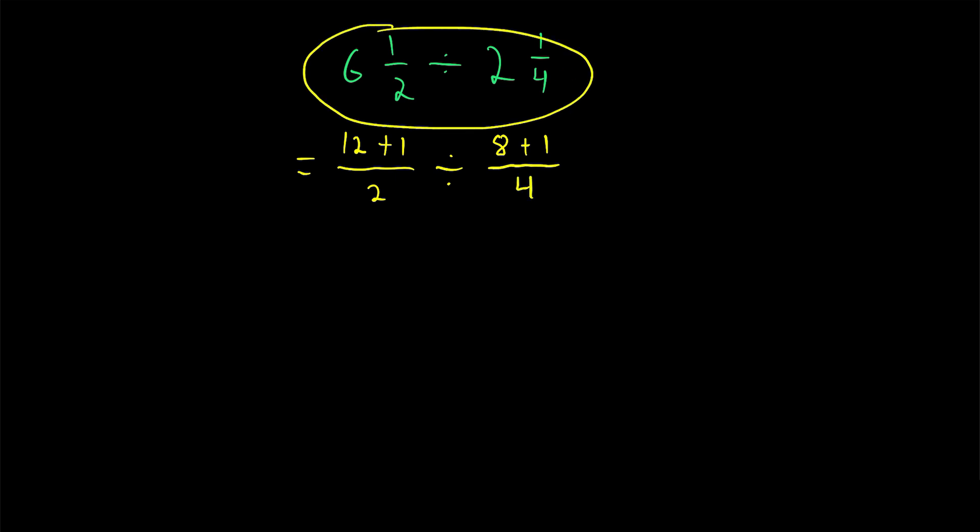Now we have rewritten the division of mixed numbers as the division of improper fractions. To quickly simplify here, we know that (12+1)/2 equals 13/2. And then divide that by (8+1)/4, which is 9/4.